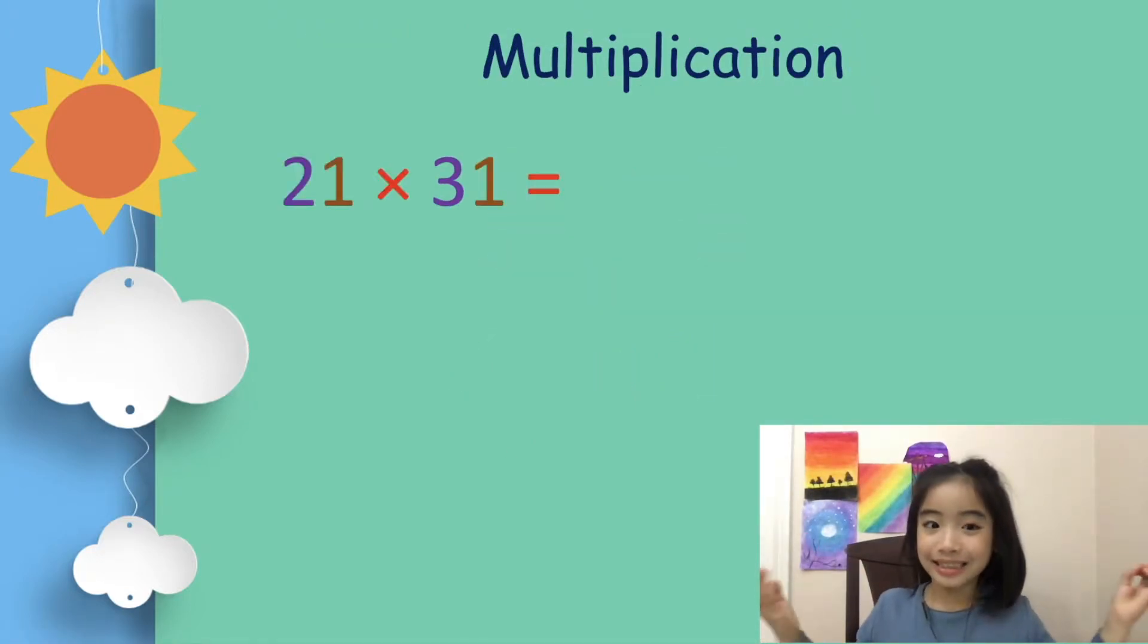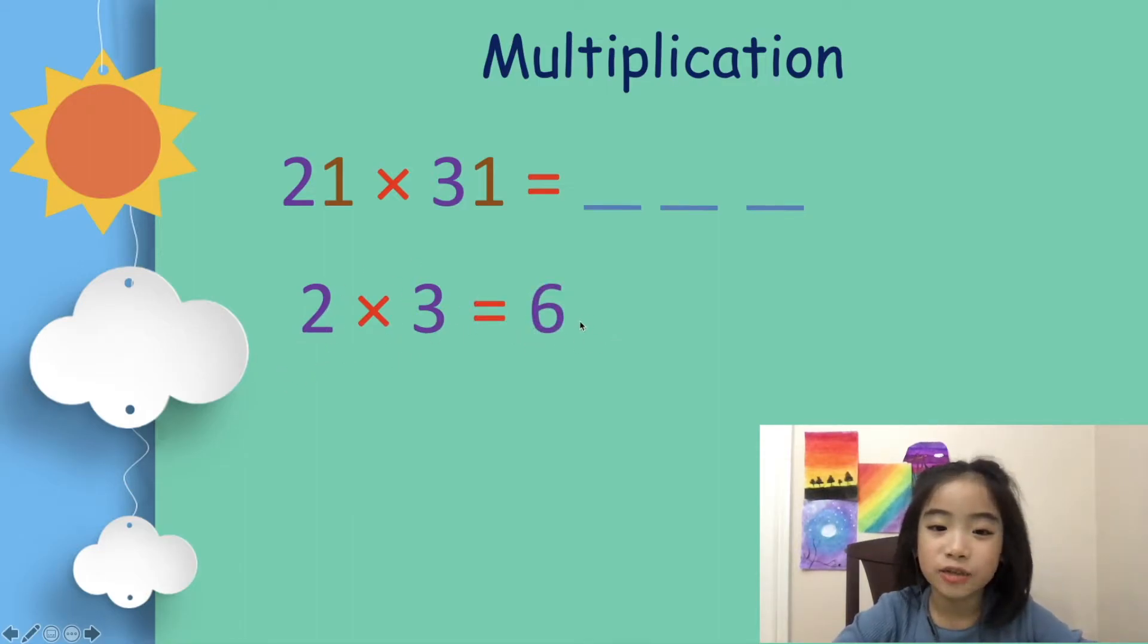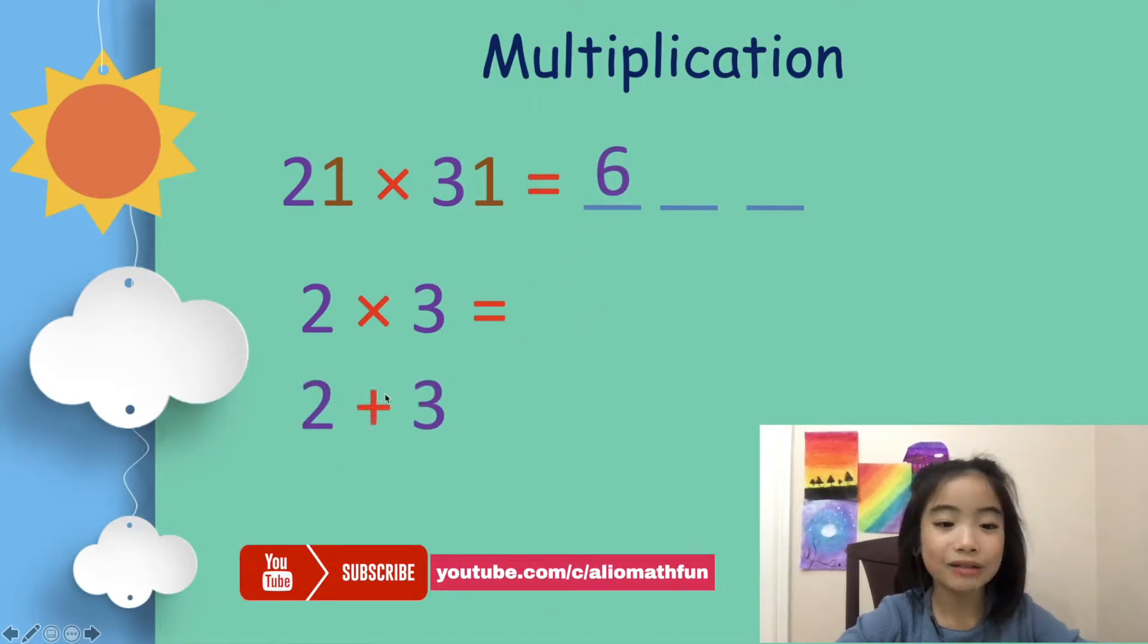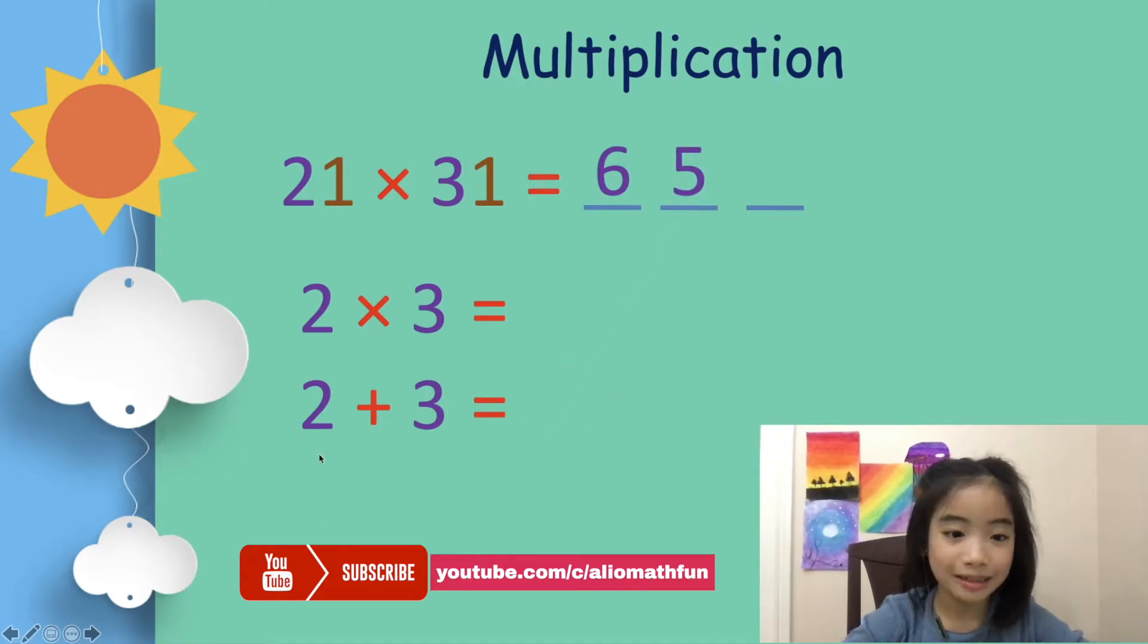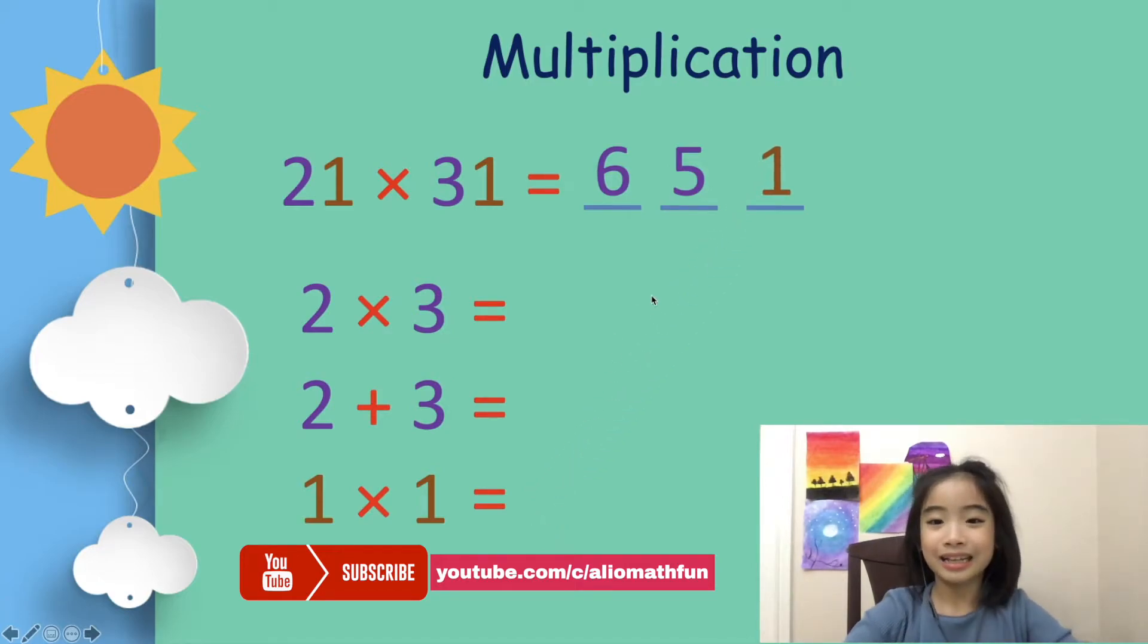Now let's learn the trick! First, we have 21 times 31. So what is the answer? The trick works like this. First, we multiply 2 times 3 equals 6. So we put the 6 in the 100th position. Now, 2 plus 3 equals 5. And let's put the 5 in the 10th position. Lastly, we have 1 times 1 equals 1. So let's put the 1 in the 1's position. Ta-da! The answer is 651.